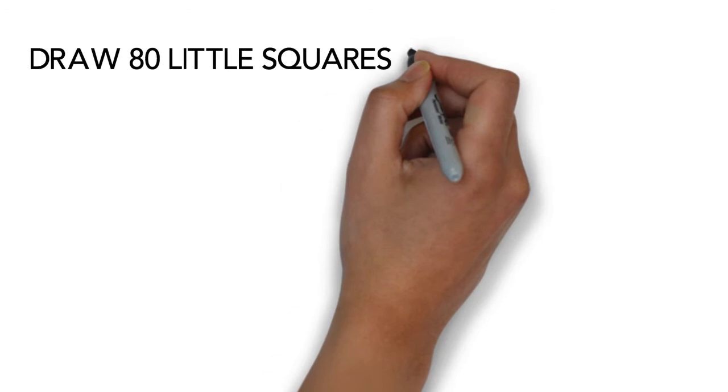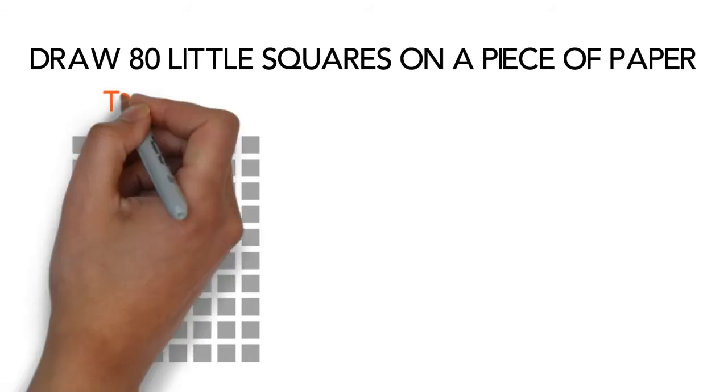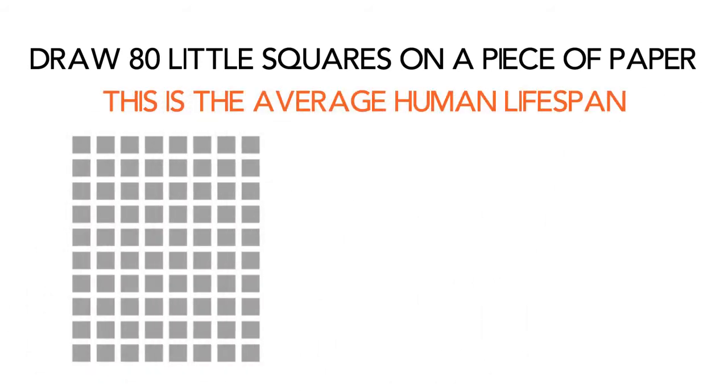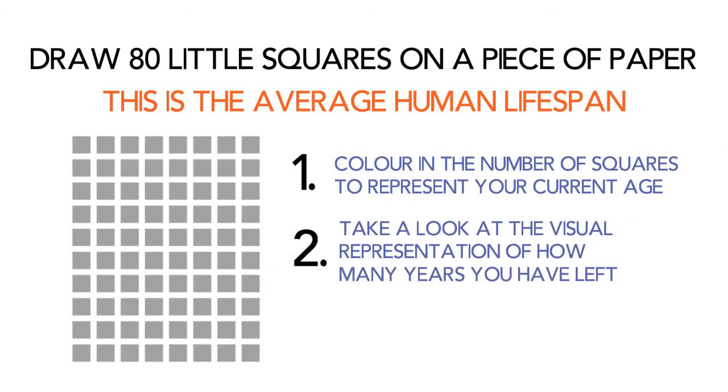I want you to draw 80 little squares on a piece of paper. Why 80? Well, these would represent the years of your life as the average human being lives until they're 80. Now, color in the squares that represent your current age and compare the difference in squares. You now have a visual representation of how many years you have.